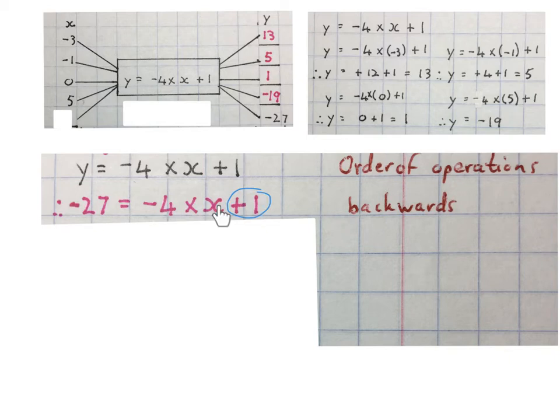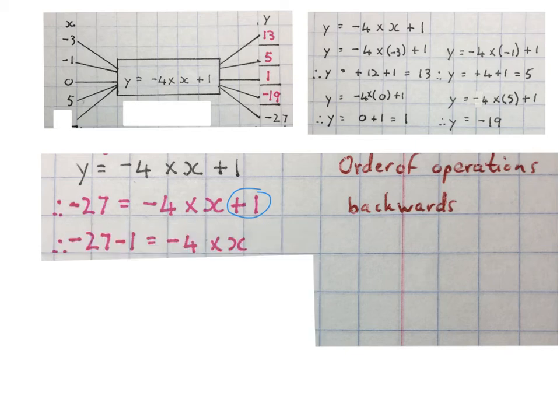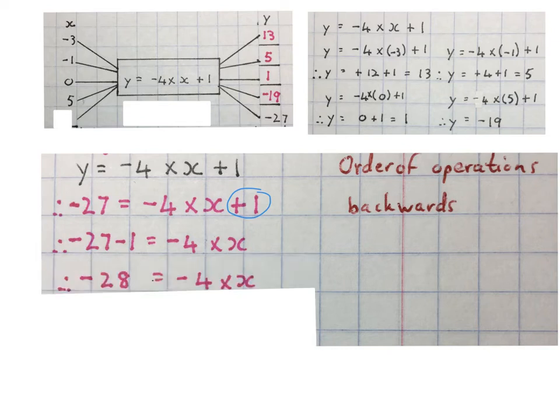To get this X alone there's a plus one, so I'm going to minus one on both sides. So the minus four times X waits, and this becomes minus twenty-seven minus one. To simplify this, you get minus twenty-eight equals minus four times X.